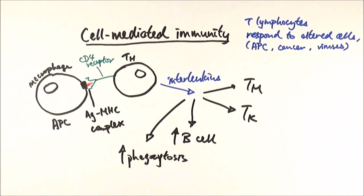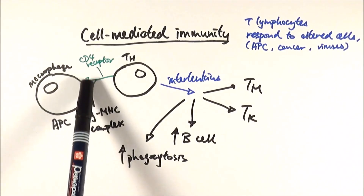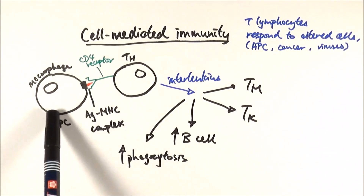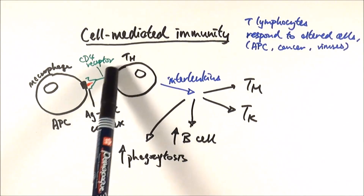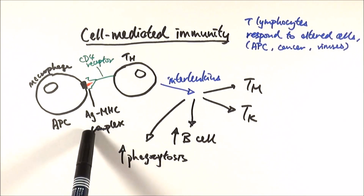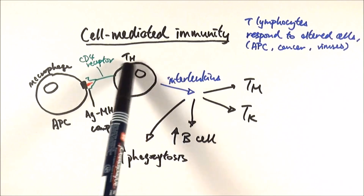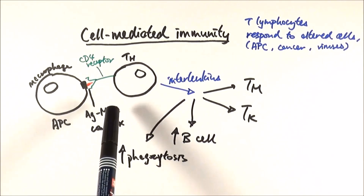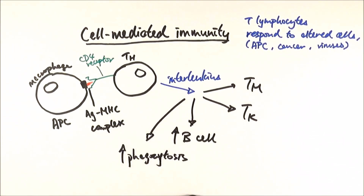Quick recap: a macrophage encounters a pathogen, engulfs and digests it, and presents it on its cell surface using the MHC, becoming an antigen-presenting cell. The first official step in cell-mediated immunity is a T helper cell with a CD4 receptor binding the antigen-MHC complex, becoming activated and releasing interleukins to tell other T cells to proliferate.